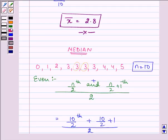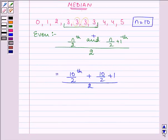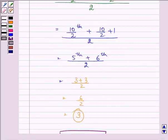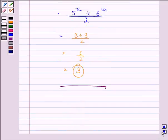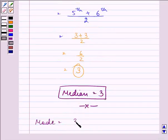Here notice that 3 is the observation which is coming the maximum time, that is four times. So the mode will be equal to 3.